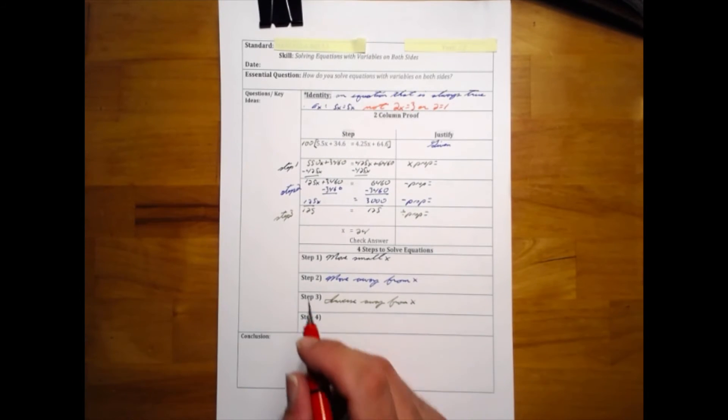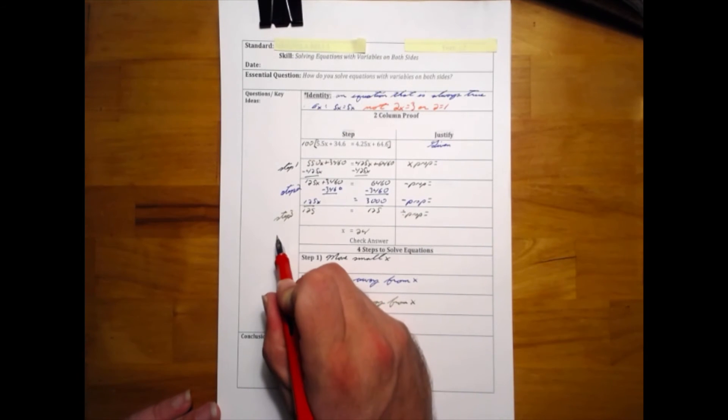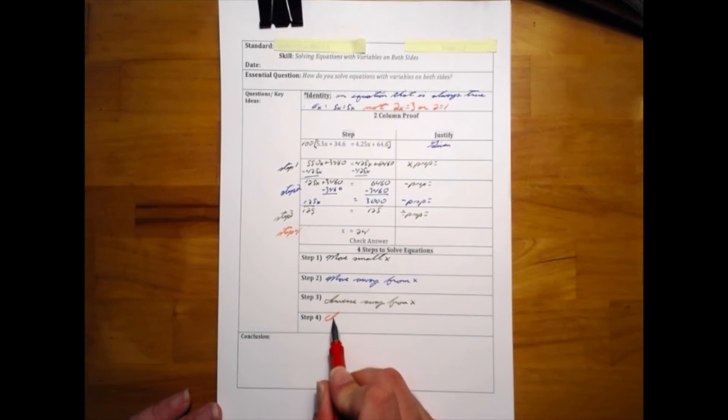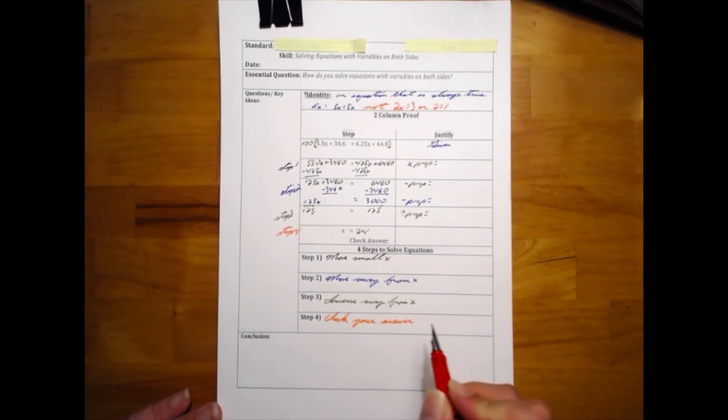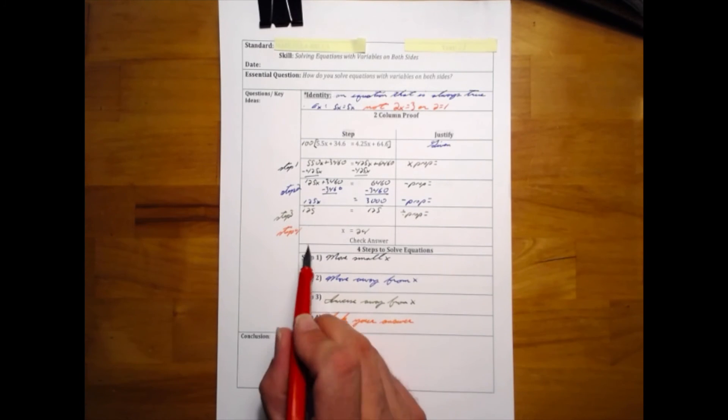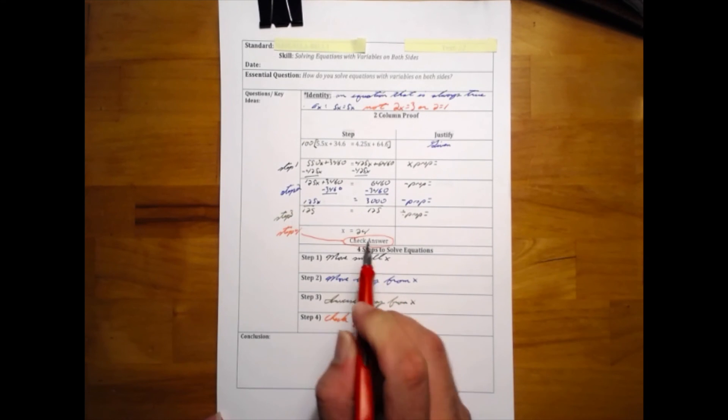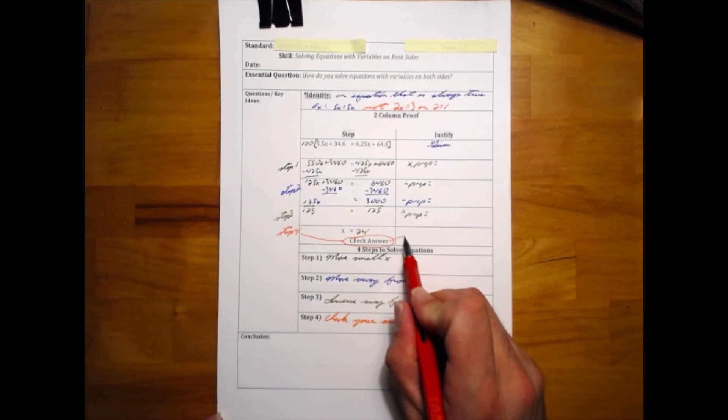Knowing that x equals 24 is not in itself good enough. We need to always be willing to check our work. Simply substitute 24 into the original equation everywhere that x is, and you can see that it should still work. If it does not work, then it is not true and the answer is incorrect. So we always want to check our work.